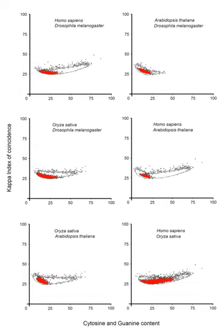A subgenomic promoter is a promoter added to a virus for a specific heterologous gene, resulting in the formation of mRNA for that gene alone. Many positive sense RNA viruses produce these subgenomic mRNAs as one of the common infection techniques used by these viruses and generally transcribe late viral genes. Subgenomic promoters range from 24 nucleotides to over 100 nucleotides and are usually found upstream of the transcription start.